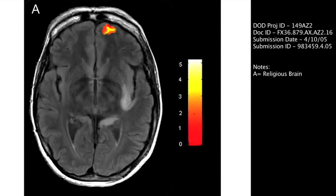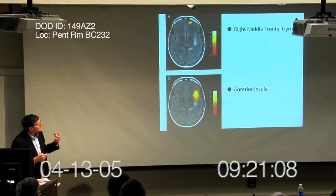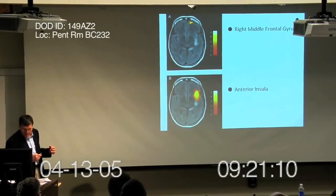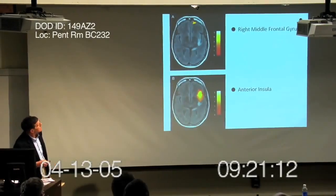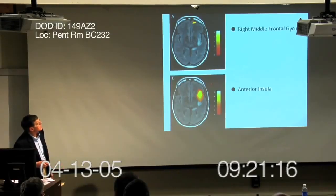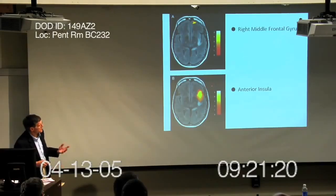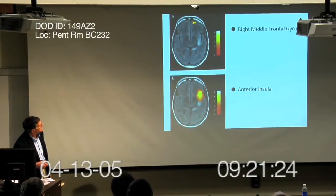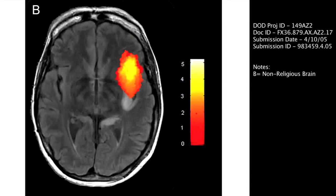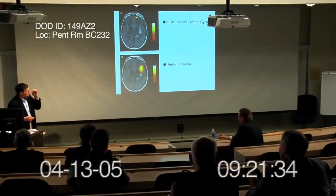That's a part of the brain associated with theory of mind — intents, beliefs, and desires. In marked contrast, here's an individual who would not particularly self-describe as religious. When they're read a religious text, what you see is that the anterior insula lights up. This is a part of the brain associated with disgust or displeasure on hearing something.